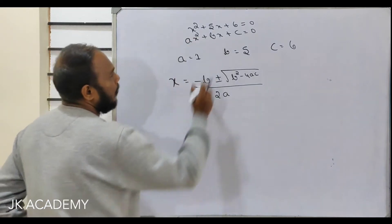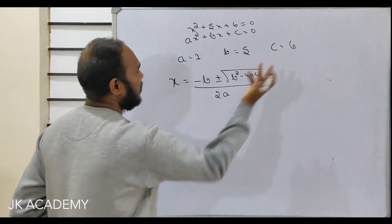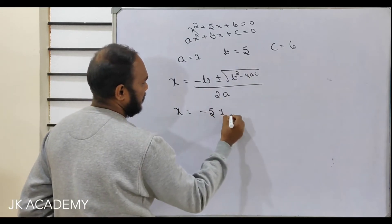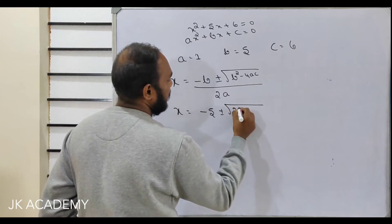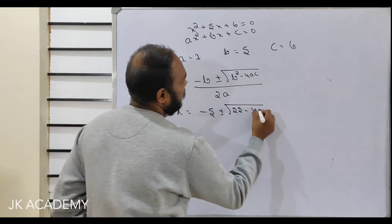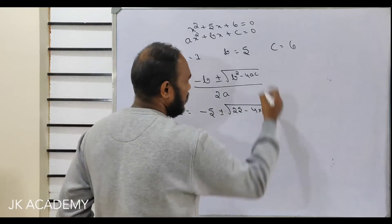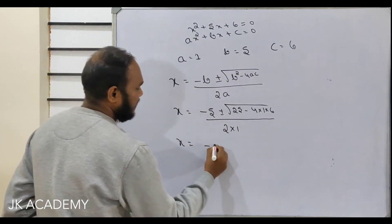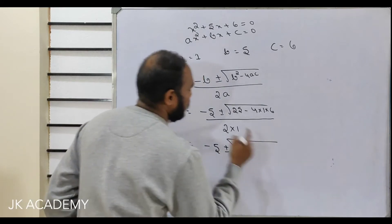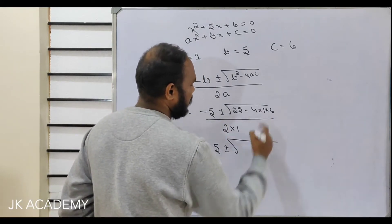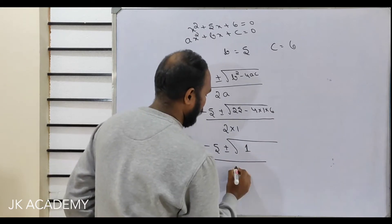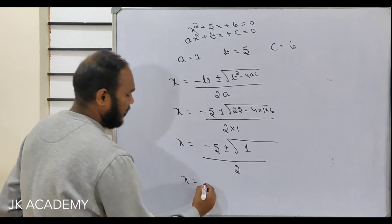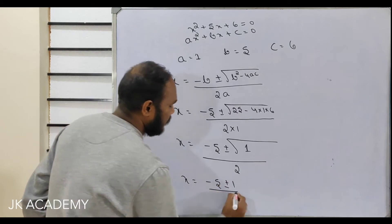Let's substitute the values from the given data. x equals minus 5 plus or minus root of b squared — that is 25 — minus 4 times a (which is 1) times c (which is 6), over 2 times 1. So we get x equals minus 5 plus or minus root of 25 minus 24, which is root of 1, over 2.